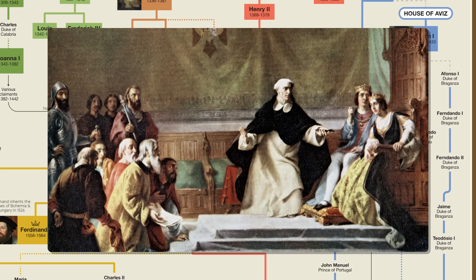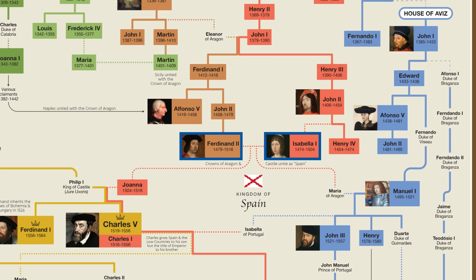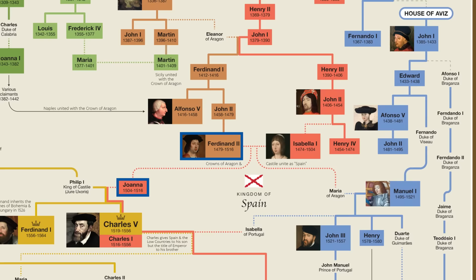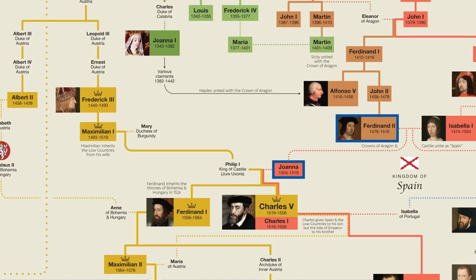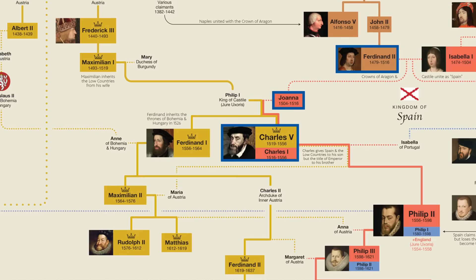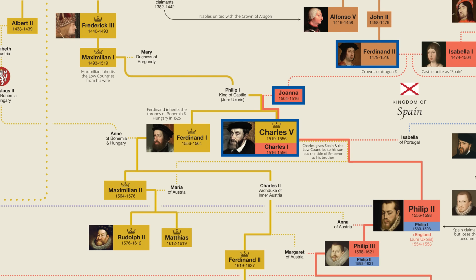Ferdinand and Isabella had a son named John, who was the Prince of Asturias and the heir apparent to the Spanish crown. However, John died when he was 19, and so his sister Joanna became the heir apparent to both Castile and Aragon. Isabella died in 1504 and the crown of Castile passed to Joanna. Joanna was married to Philip, the son of Holy Roman Emperor Maximilian I. This meant that their son, Charles of Austria, was in line to inherit the kingdoms of Castile and Aragon, as well as parts of the Kingdom of Navarre, which had been annexed by Ferdinand II, who had also conquered much of the Kingdom of Naples.